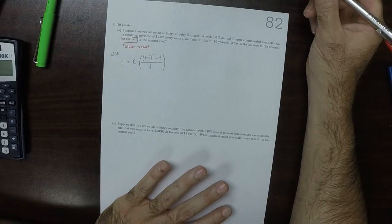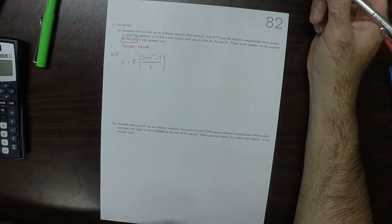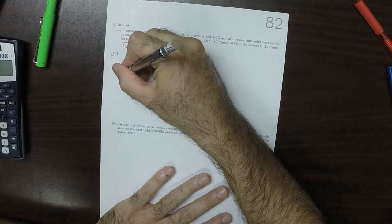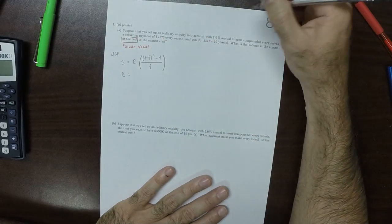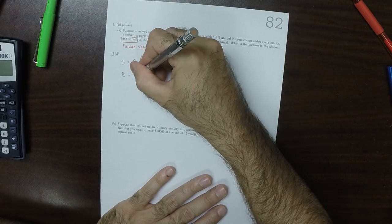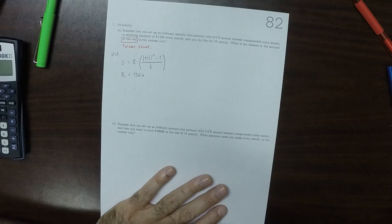In using this, we're going to use R, the recurring payment is $1,326 every month.